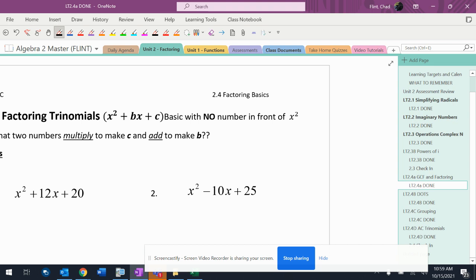Factoring trinomials is undistributing them. So it's taking this and turning it back into two sets of parentheses that typically have an x and an x, and then maybe a plus and a minus, and then some sort of number here and some sort of number here.